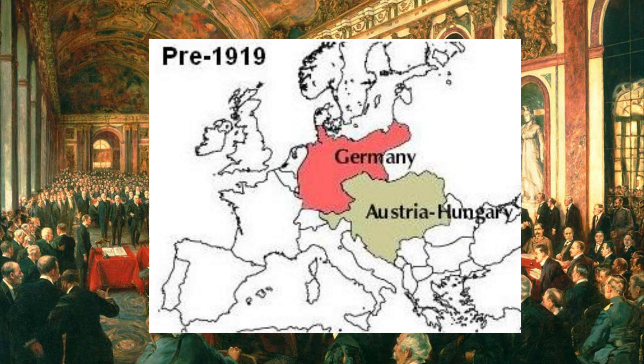Some historians think the Treaty of Versailles was, in the words of British economist John Maynard Keynes, "one of the most serious acts of political unwisdom for which our statesmen have ever been responsible." They say it contributed to German economic and political instability that allowed for the formation of the National Socialists, or Nazis, just a year later.